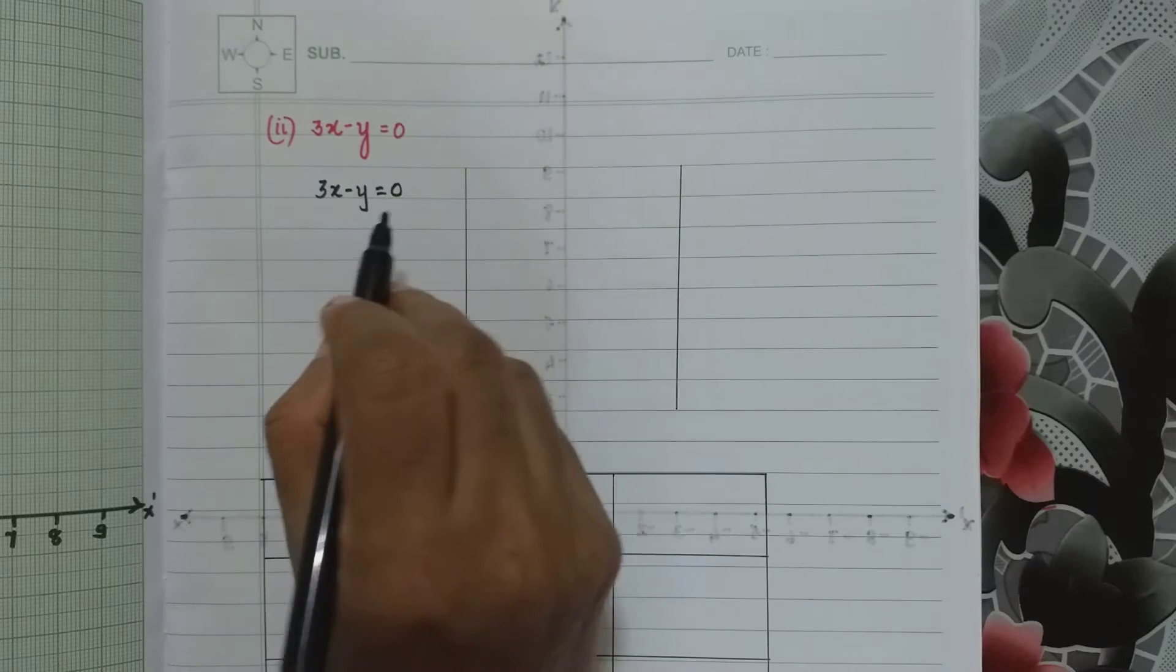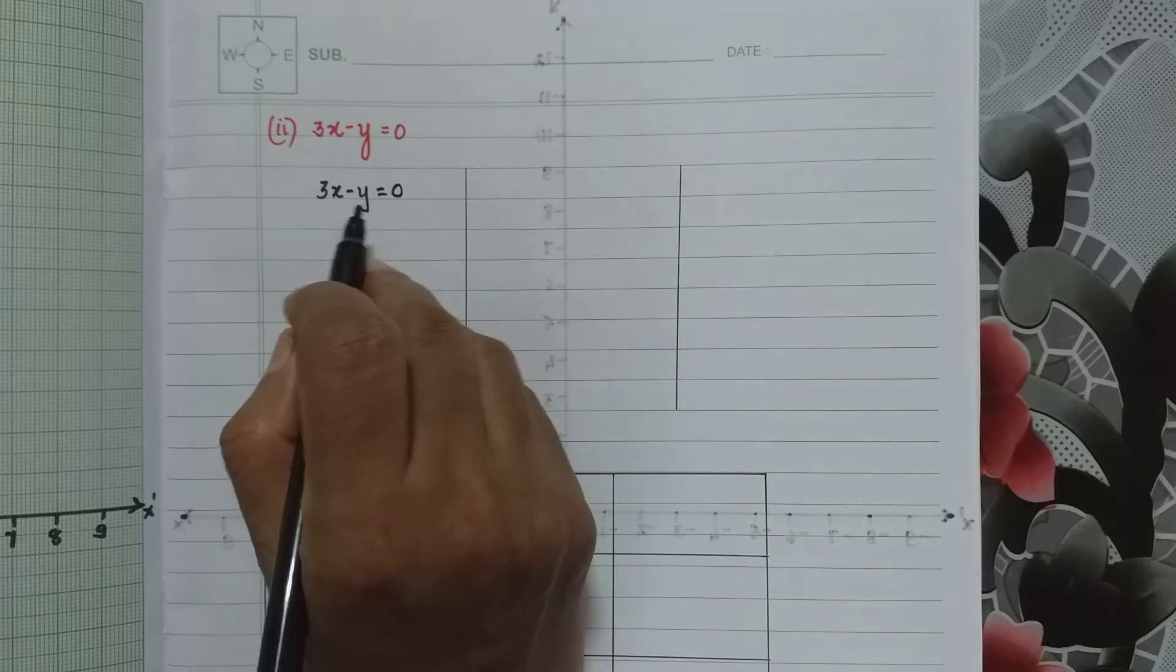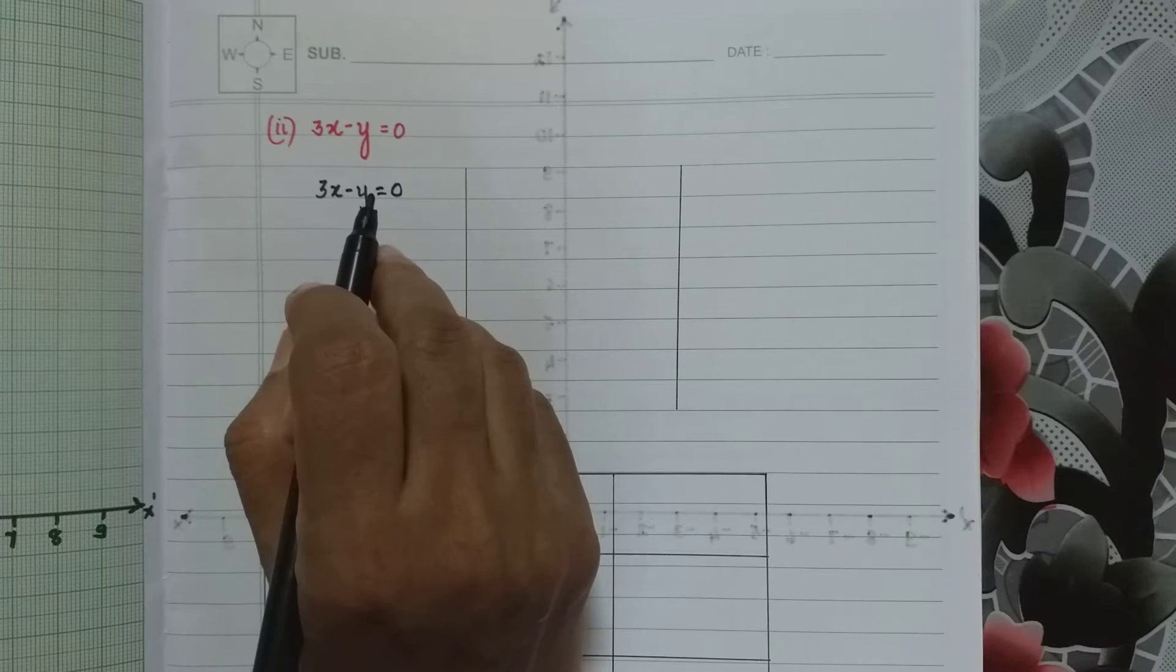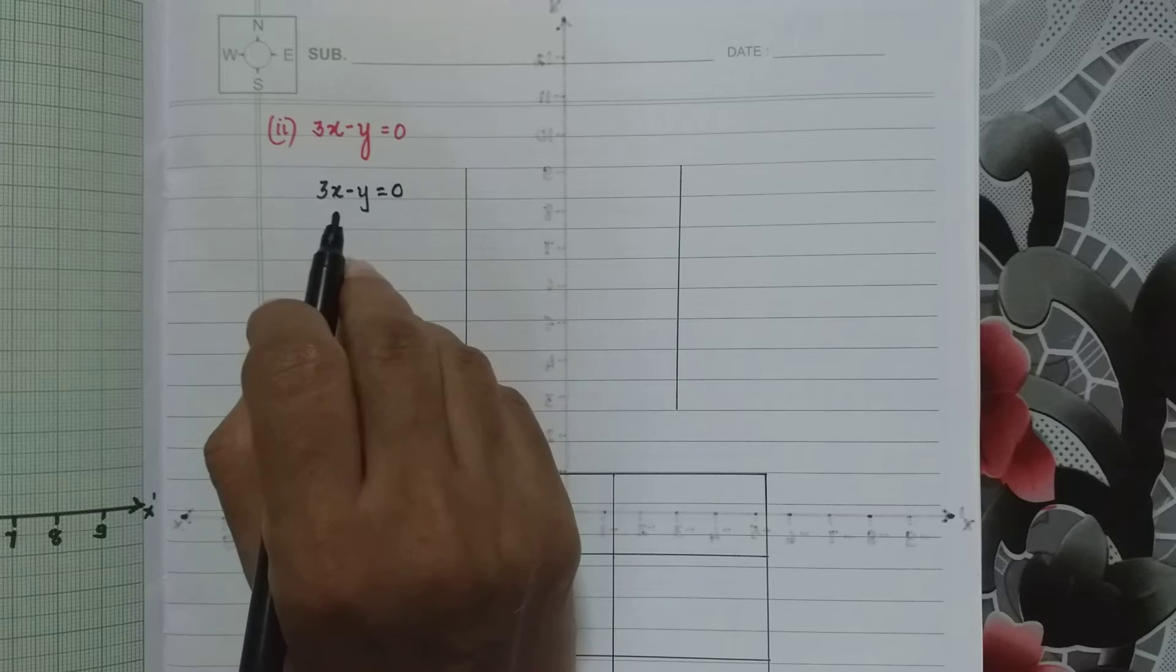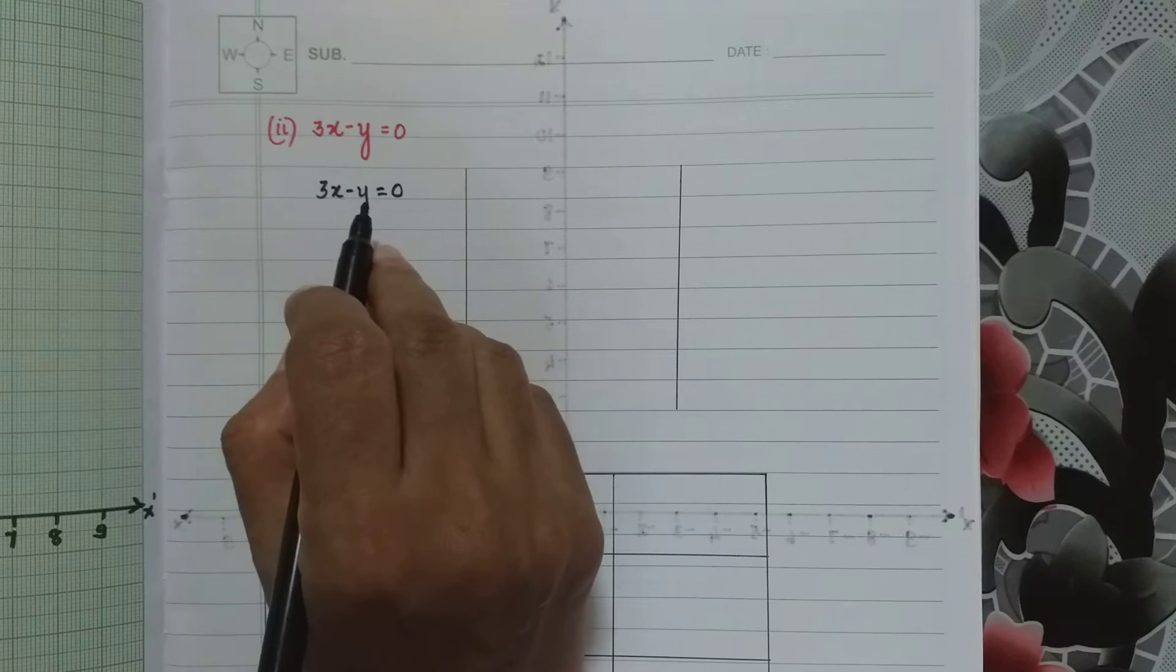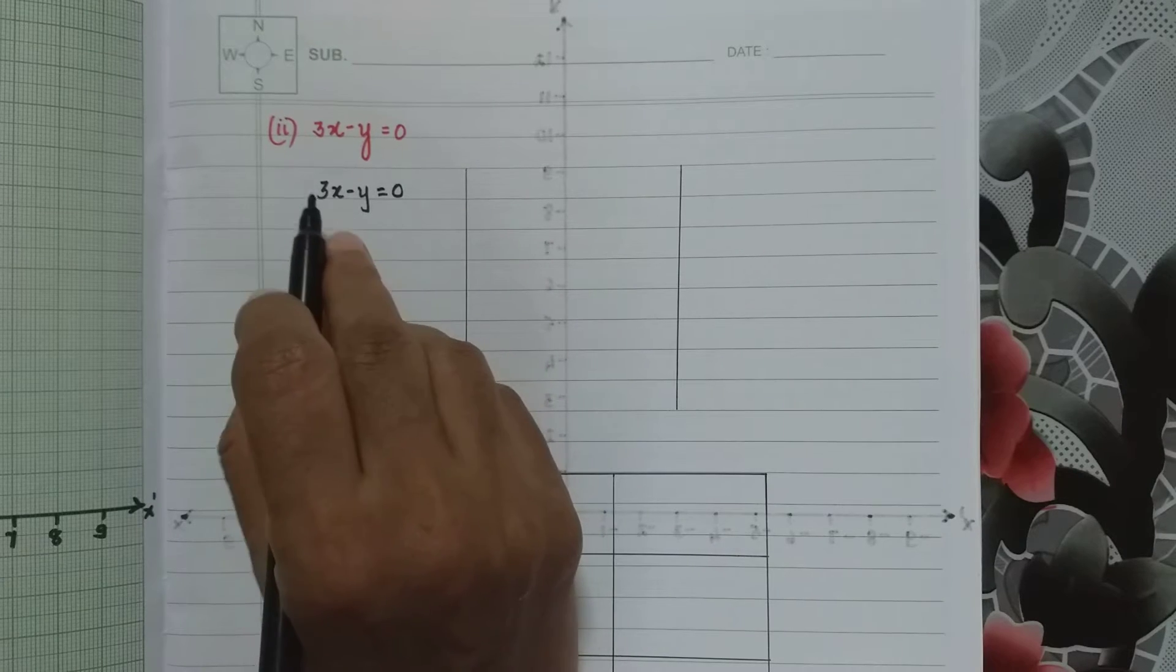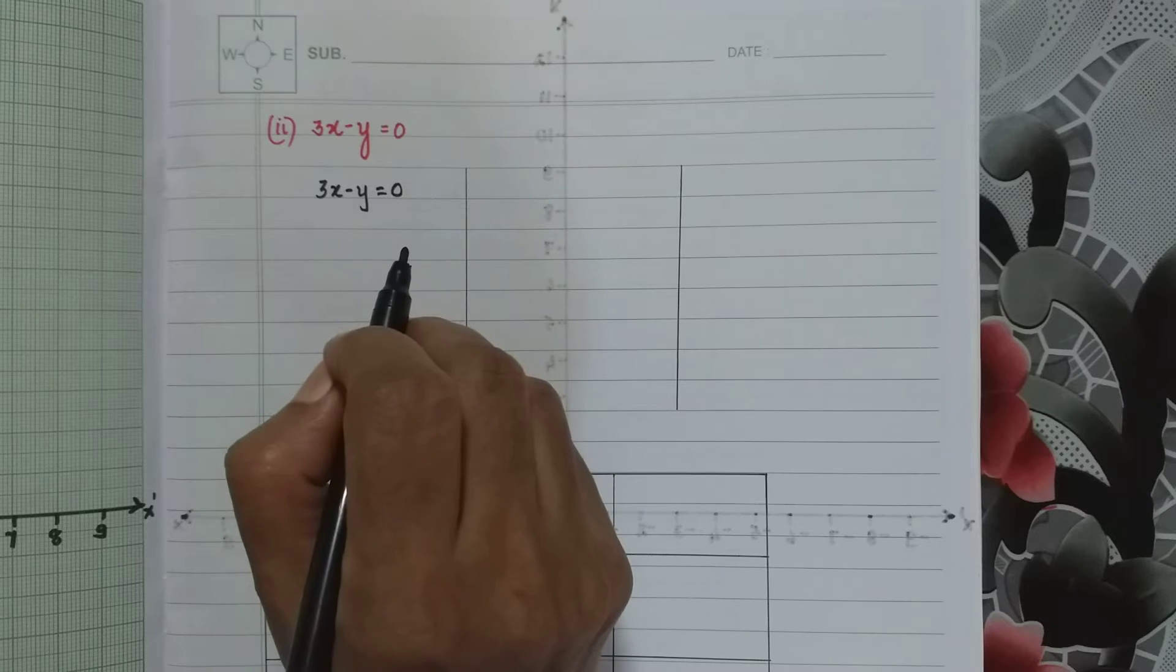Now I mentioned that usually the variable with coefficient 1 is left on one side and the others are taken to the other side. So we can keep minus y here and take 3x to the other side.